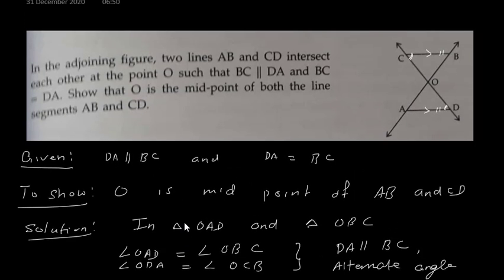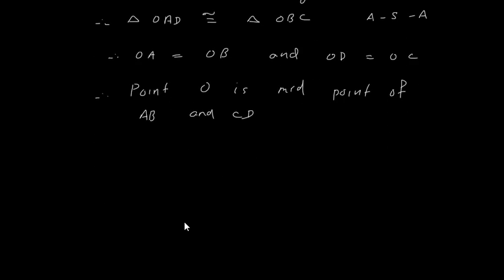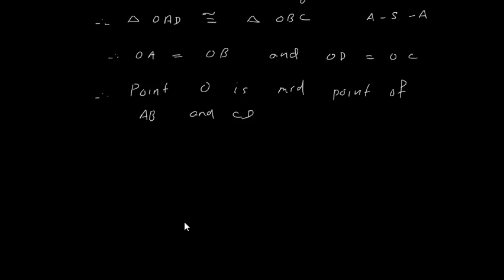As these two triangles are congruent, their corresponding sides OA equals OB and OD equals OC. Therefore, point O is the midpoint of AB and CD. OA equals OB and OC equals OD. Hence proved.